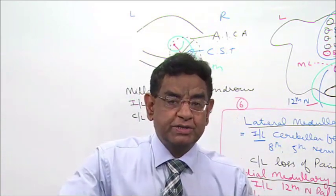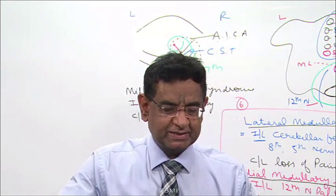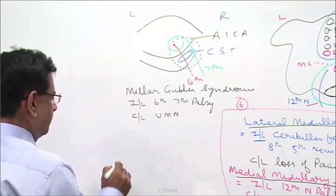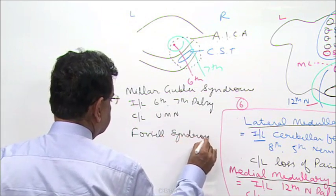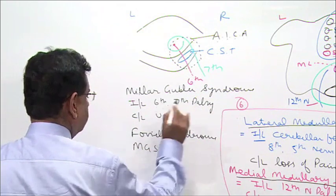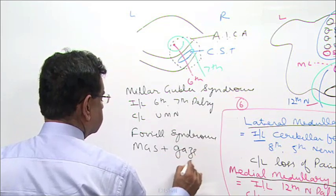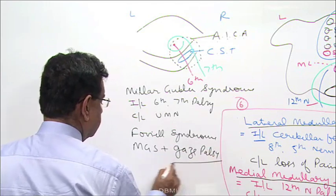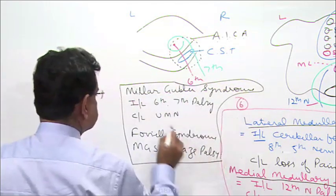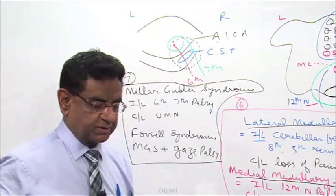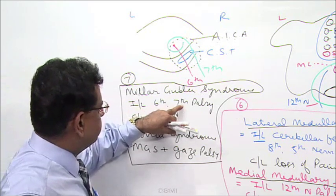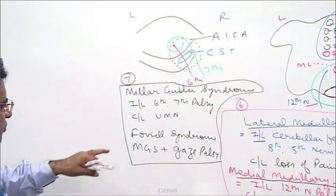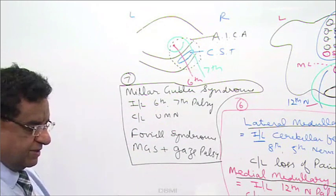Sometimes this patient might have an associated lesion of horizontal gaze palsy. That is known as Foville syndrome. Foville syndrome is Miller-Gubler syndrome plus gaze palsy — especially horizontal gaze palsy. So to summarize: Miller-Gubler syndrome is ipsilateral sixth and seventh palsy with contralateral upper motor neuron feature; Foville syndrome is Miller-Gubler syndrome plus gaze palsy.